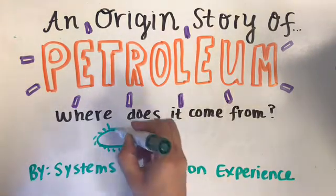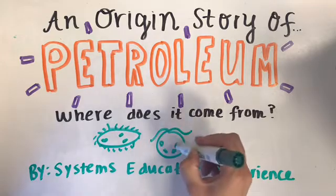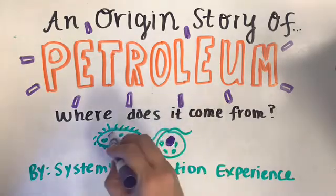This is the origin story of petroleum, as told by the Systems Education Experience. Petroleum is the fossil fuel that we use to turn into gasoline, kerosene, and diesel oil.